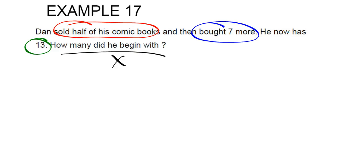So let's piece this together. He sold half his comic books, so we know it's one half times however many he had to begin with. But then he bought, so that increased his comic books by seven. His final total was 13 comic books.